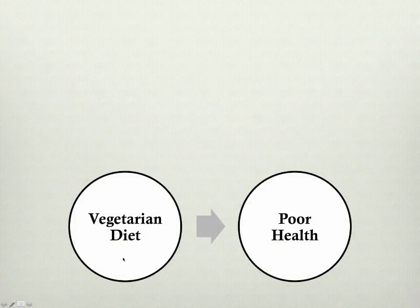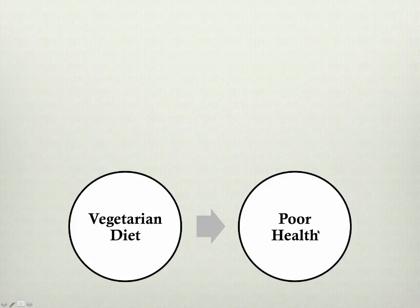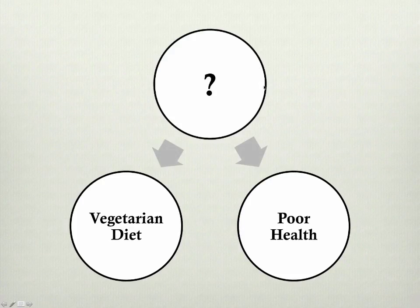Just to review again: when you have two variables, like the vegetarian diet and poor health, it could be that the vegetarian diet is causing the poor health, it could be that the poor health is causing the vegetarian diet, or it could be that some third variable that we don't know about is causing both vegetarian diet and poor health.